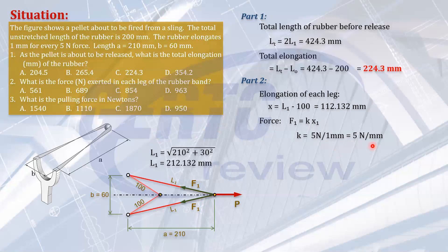That is the stiffness. How hard is the rubber? 5 newtons per mm. So if you elongate it by 2 mm, you need 10 newtons. So with X known, we can solve the force. That will be 5 times 112.132. So that's 560.66 newtons. That's the force on each leg before it was released. And that is here, letter A, 561 newtons.